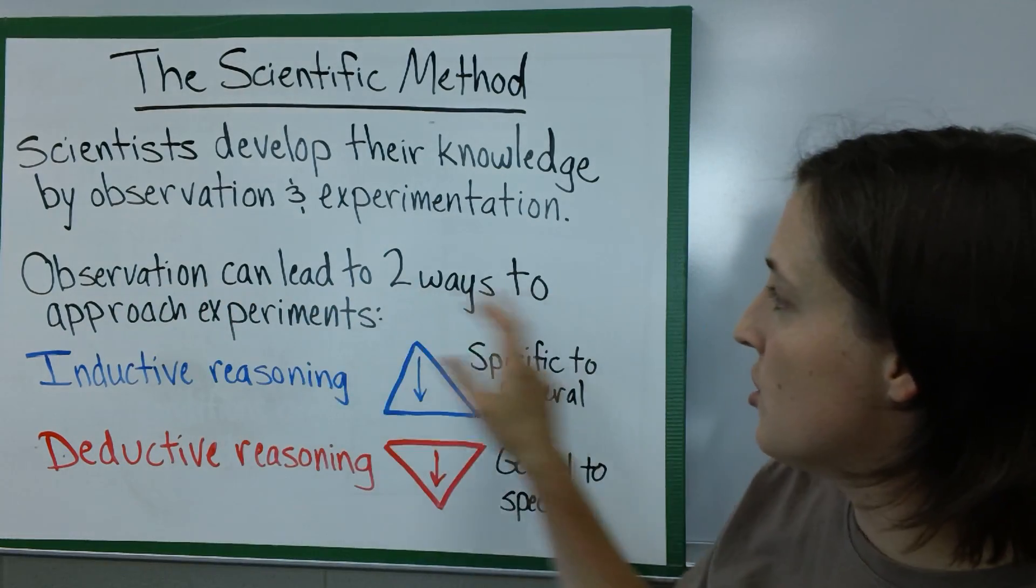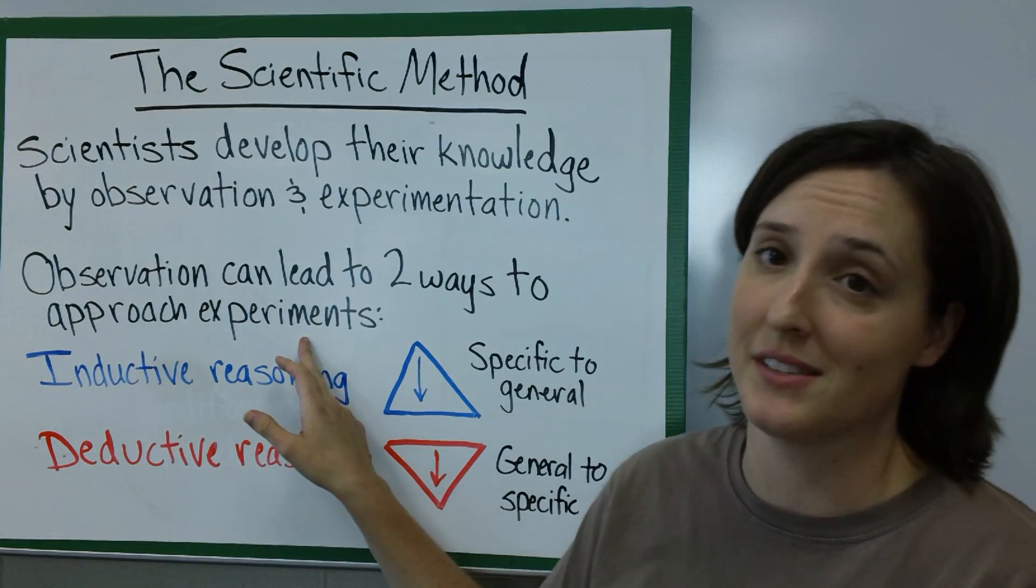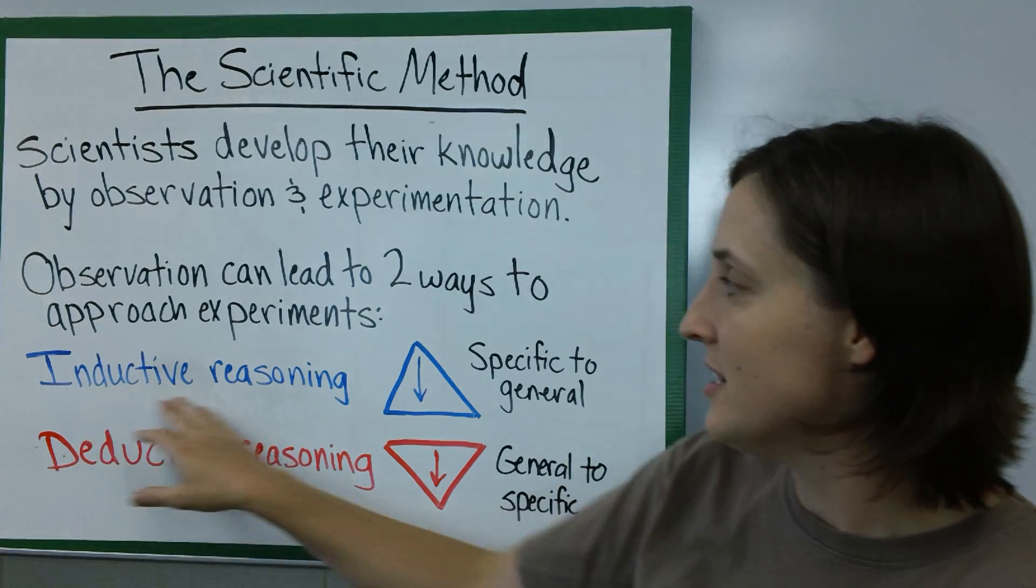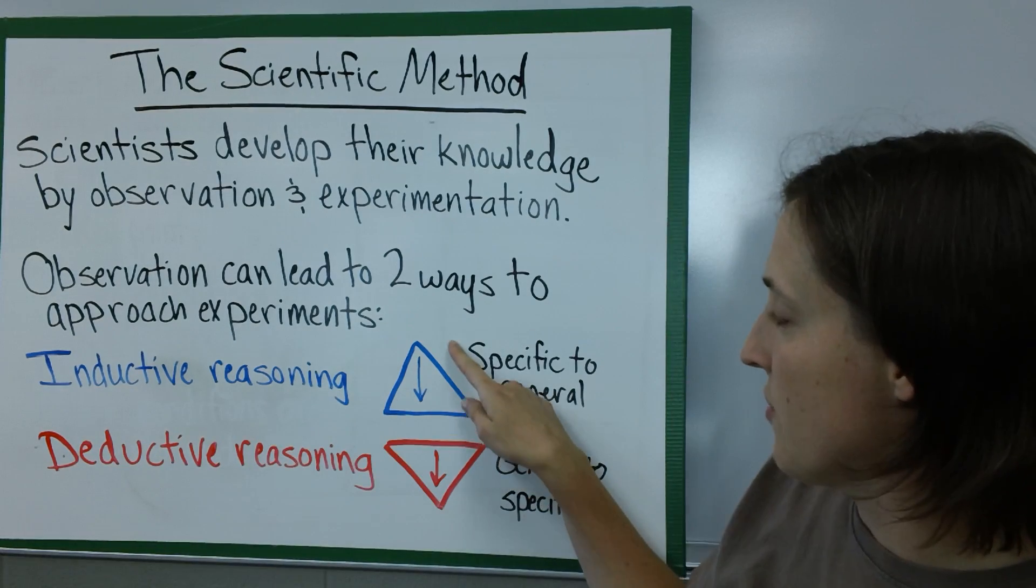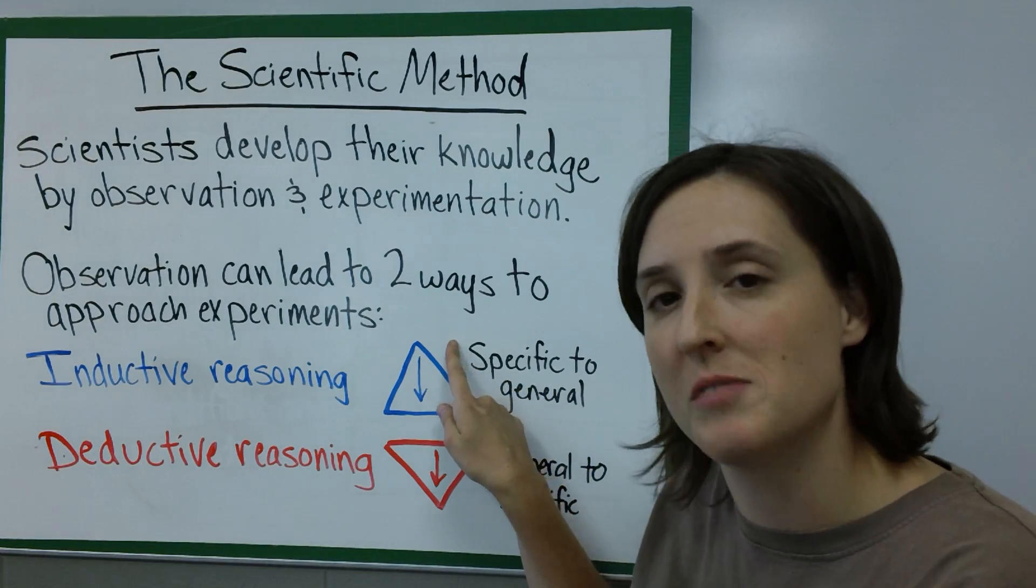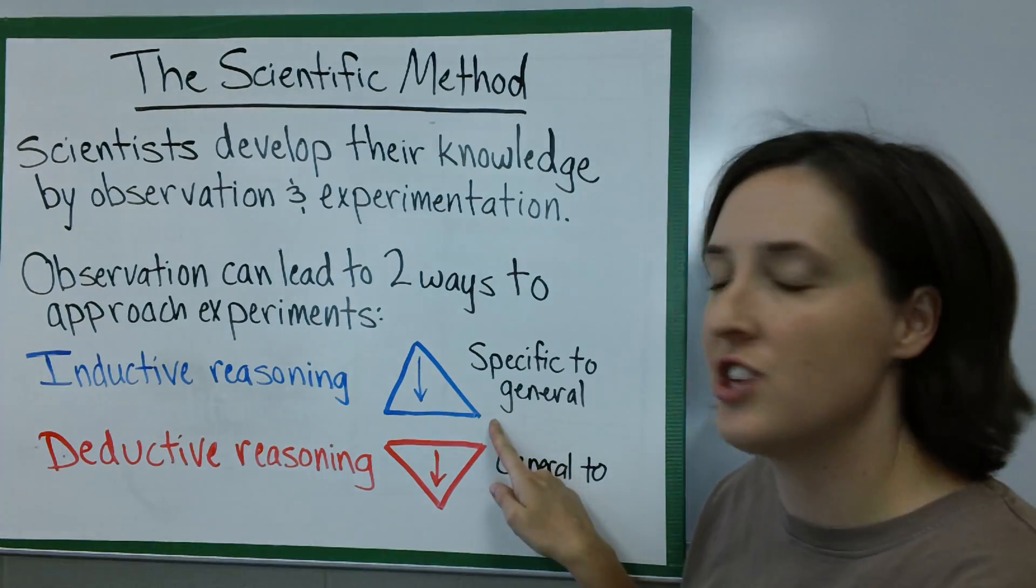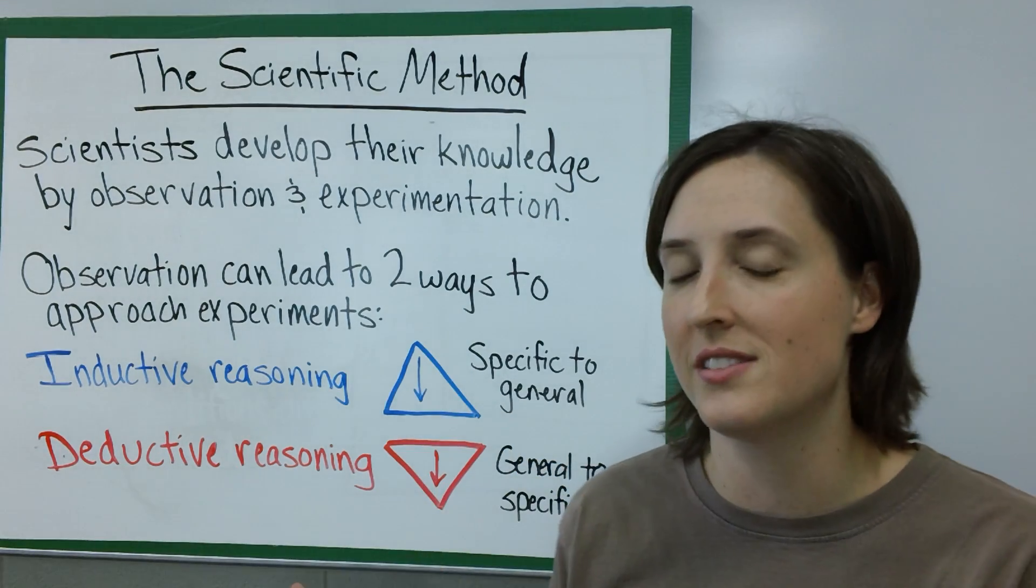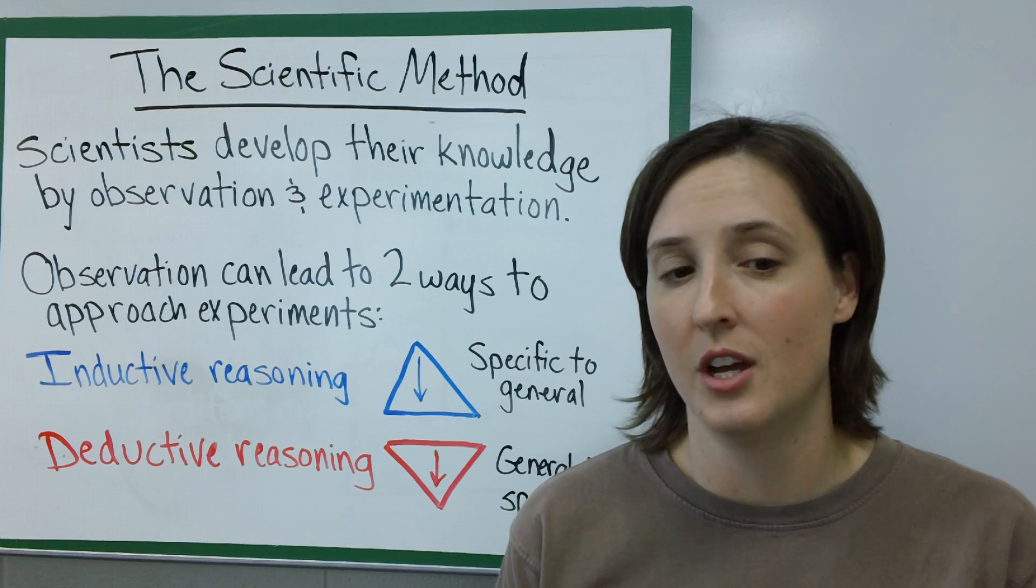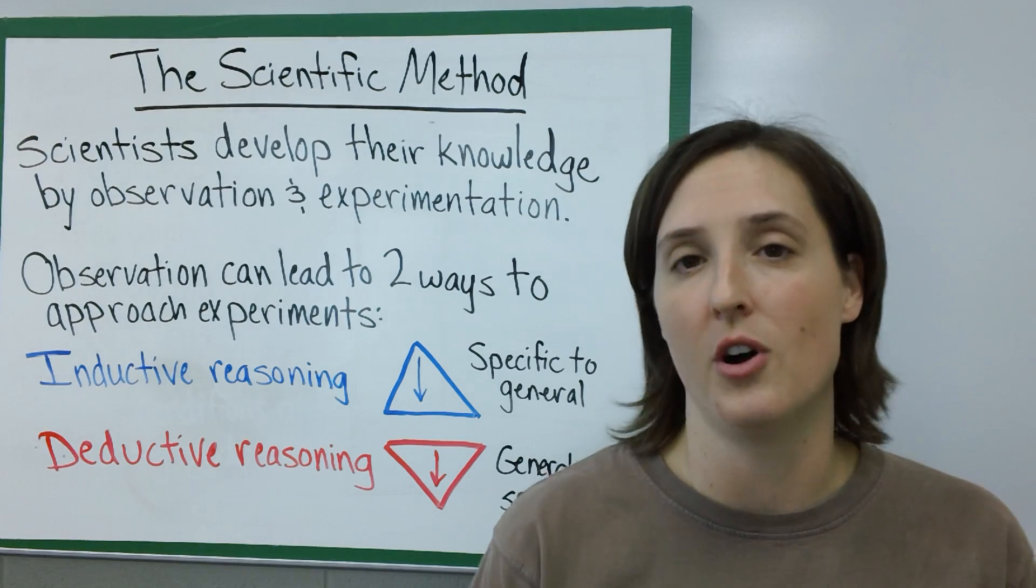Observation can lead to two ways to approach experiments. You can use inductive reasoning, which goes from specific information or specific cases to very general principles. For instance, if I drop something from my hand it's going to fall to the ground.